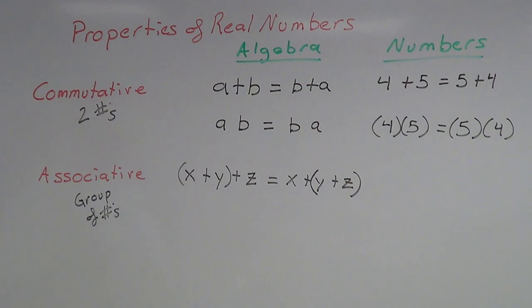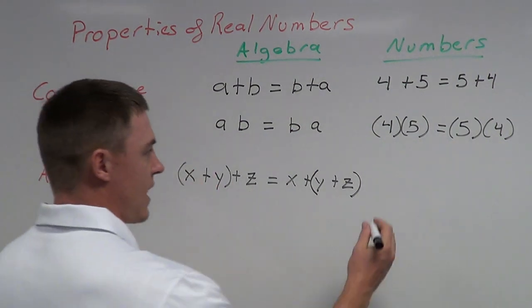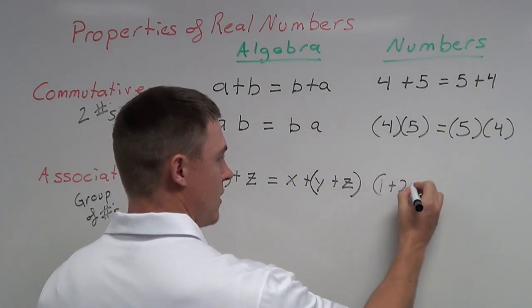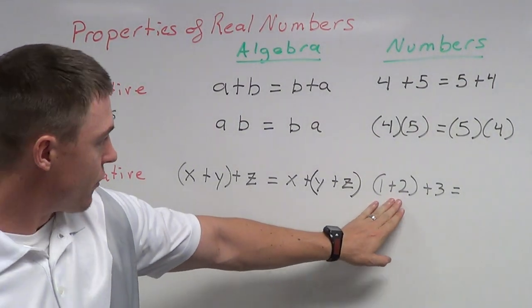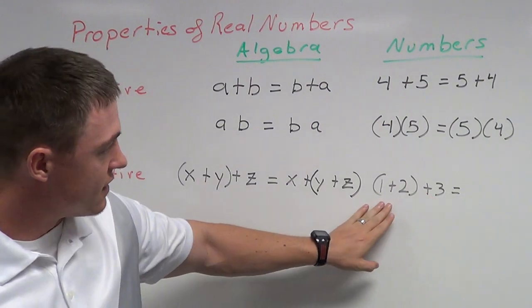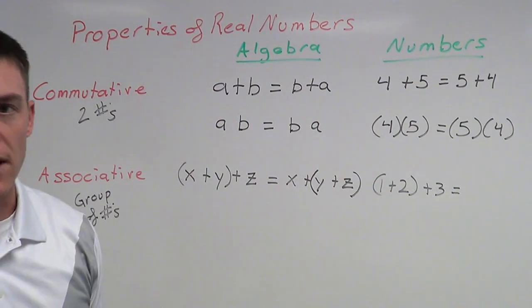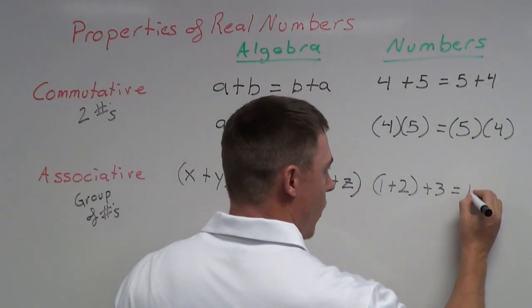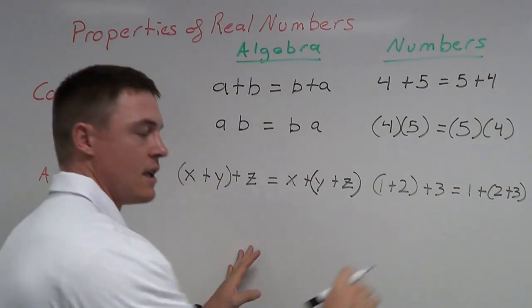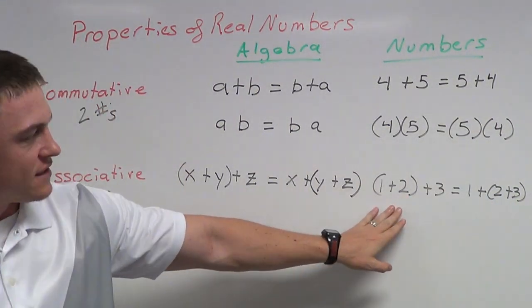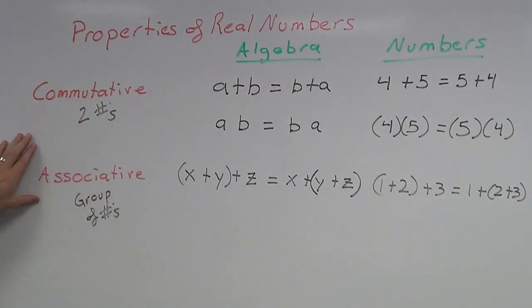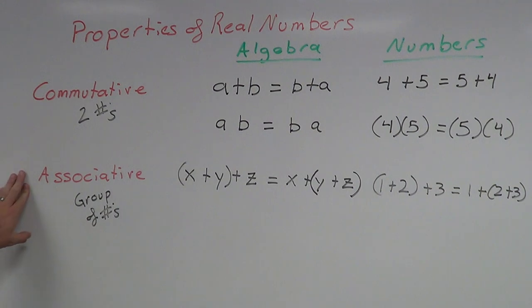Let's try this with numbers. Let X = 1, Y = 2, Z = 3. So (1 + 2) + 3: one plus two is three, and three plus three is six. On the other side, 1 + (2 + 3): two plus three is five, and five plus one is six. The left side is six and the right side is six. We can see with numbers that the associative property holds true — it doesn't matter what order I add these groups of numbers.